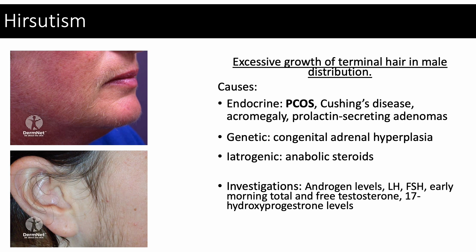Other causes include Cushing's disease, acromegaly, prolactin-secreting adenomas, congenital adrenal hyperplasia, and anabolic steroids. Useful investigations include androgen levels, luteinizing hormone (LH), follicle stimulating hormone (FSH), early morning total and free testosterone, and 17-hydroxyprogesterone levels.